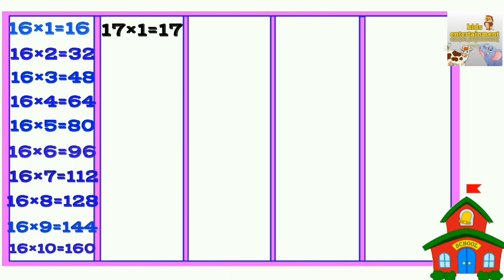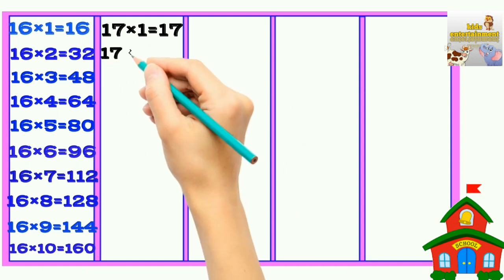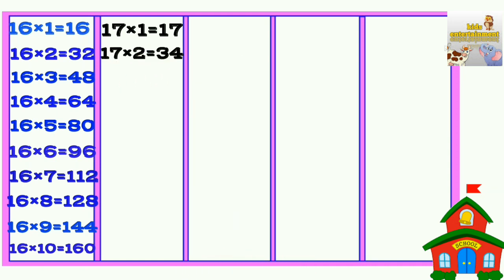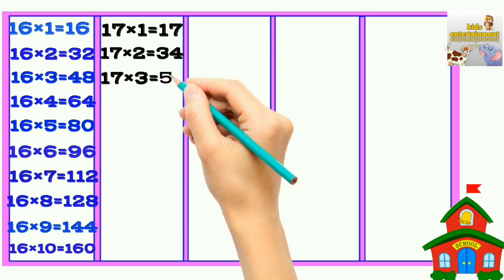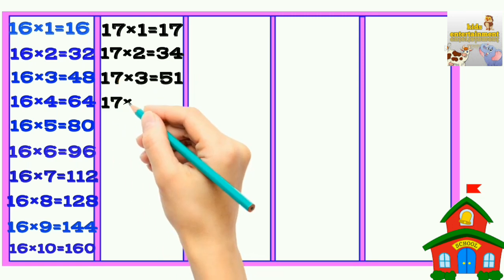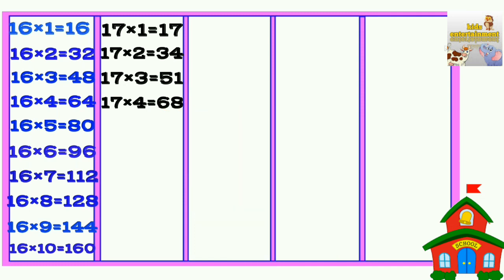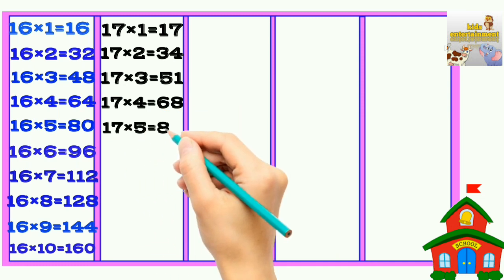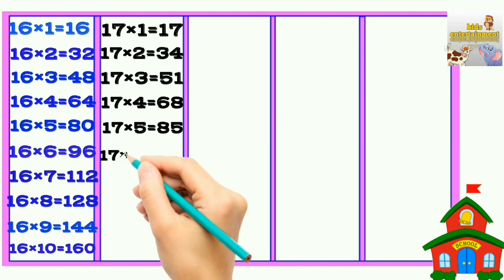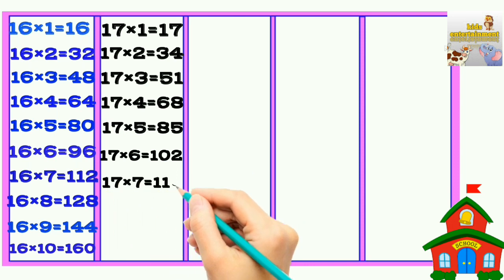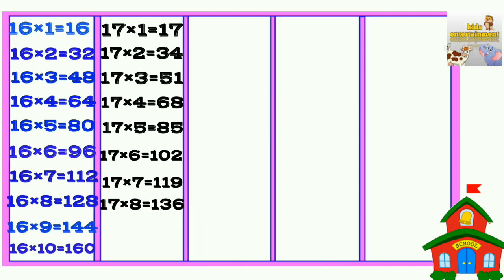17 times 1 is 17, 17 times 2 is 34, 17 times 3 is 51, 17 times 4 is 68, 17 times 5 is 85, 17 times 6 is 102, 17 times 7 is 119, 17 times 8 is 136, 17 times 9 is 153, 17 times 10 is 170.